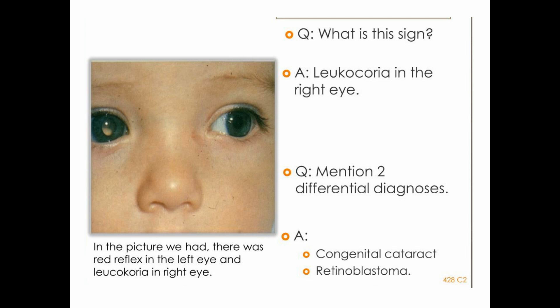Look at this picture and answer the question. This is a very important picture. What is this sign called? This sign is called leukocoria — white reflex. What are the different differential diagnoses for white reflex? Number one is congenital cataract, second is retinoblastoma, and third is Coats disease. All three differential diagnoses should be mentioned for this picture.